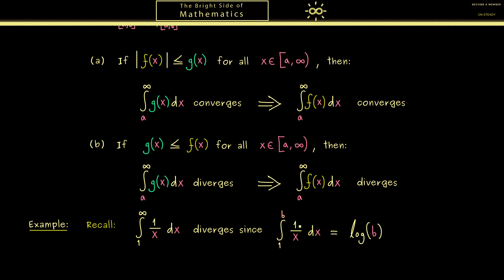Therefore, for a positive number b, this integral is exactly log of b. And now you just have to know what happens to the logarithm when the argument goes to infinity. And indeed, the logarithm also expands to infinity. In this sense, you could say this integral here is infinity. Hence, 1 over x is a good minorant to check for divergence.